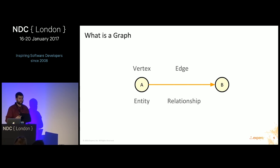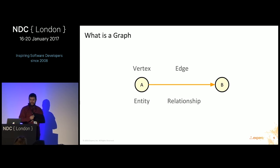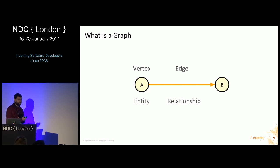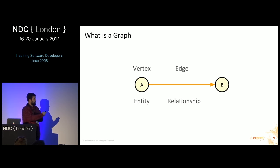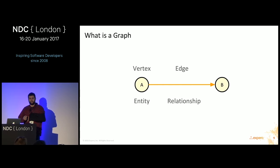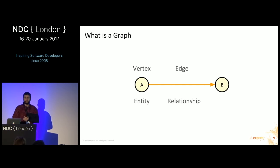A graph is an ordered set of vertices and edges — and I promise that's the last time I'll talk about math theory. Vertices are a finite set of elements, and edges are basically a set of two subsets of vertices. Nodes are connected by edges. Another way to think about this: it's an entity and the relationship between them. When working with these, vertices are the nouns and edges are the verbs in your domain model.